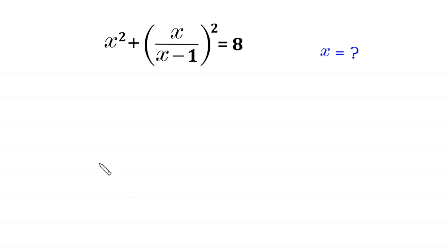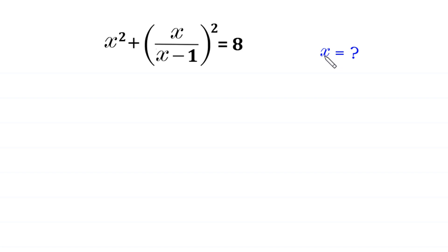Hello, welcome to how to solve this very nice algebra equation. x squared plus x over (x minus 1), whole squared, is equal to 8. We need to find all possible values of x. Let's start.